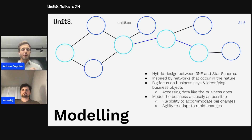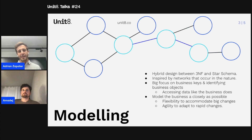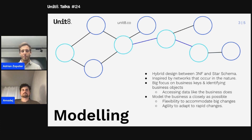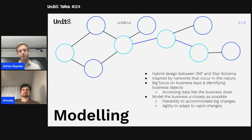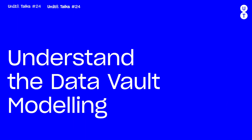Data Vault also puts a very big focus on identifying the business keys and business objects, trying to really understand how the business accesses and works with the data. If we manage to correctly identify these business objects, we will be modeling very closely what the business is really doing. This gives us the flexibility to adapt to big changes introduced by changing business requirements, and also the agility to do so very fast.